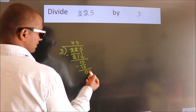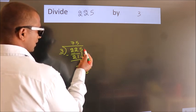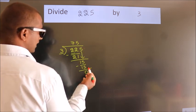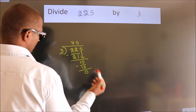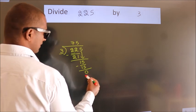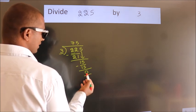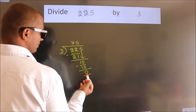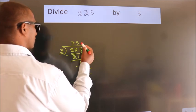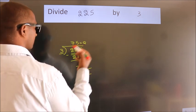After this, there are no more numbers to bring down, and we got remainder 0. So, this is our quotient.